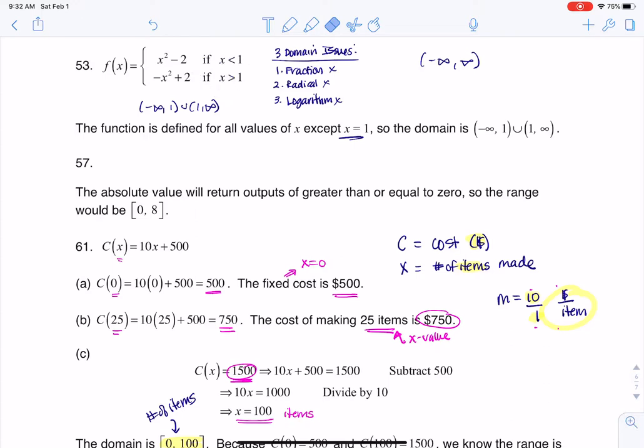Just to kind of extend that, if this had said, let's say this was greater than or equal to one right here, then my domain would have been all real numbers. But it does not say greater than or equal to one, and that's why my domain is all real numbers except x equaling one.